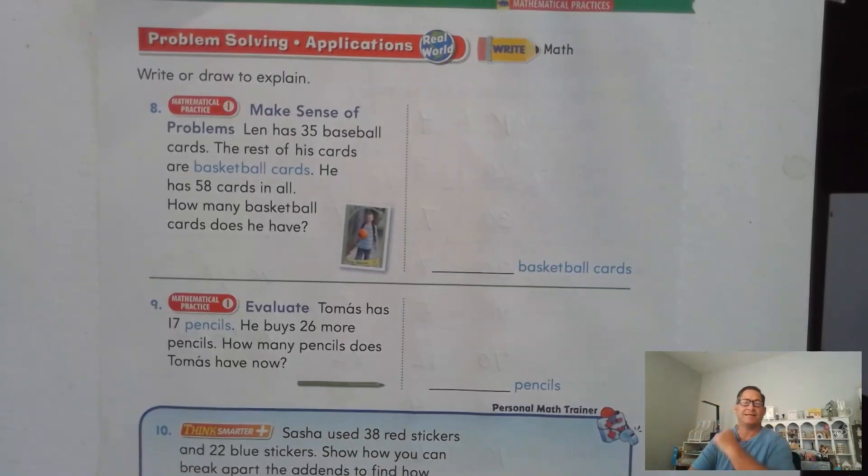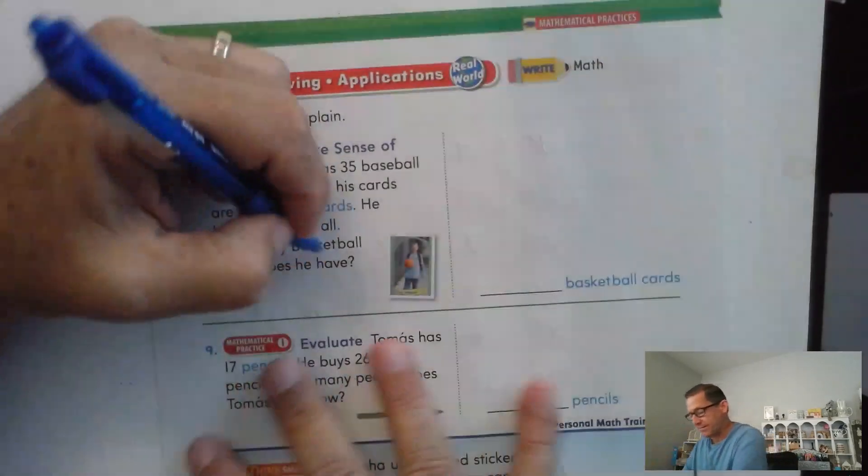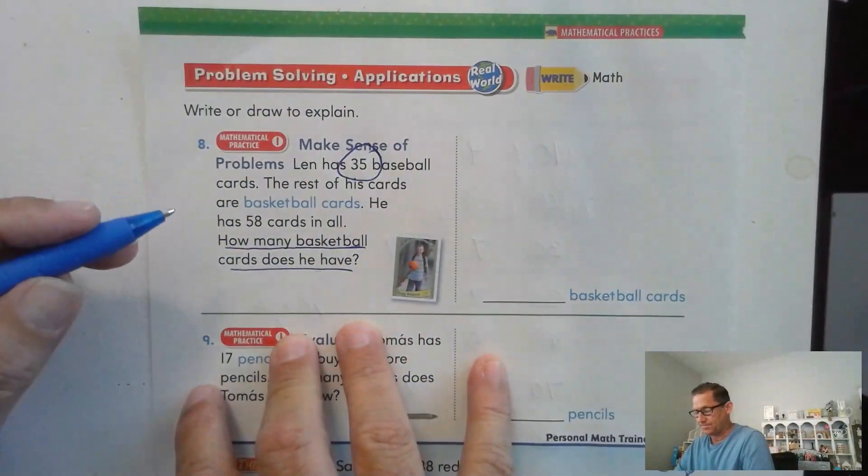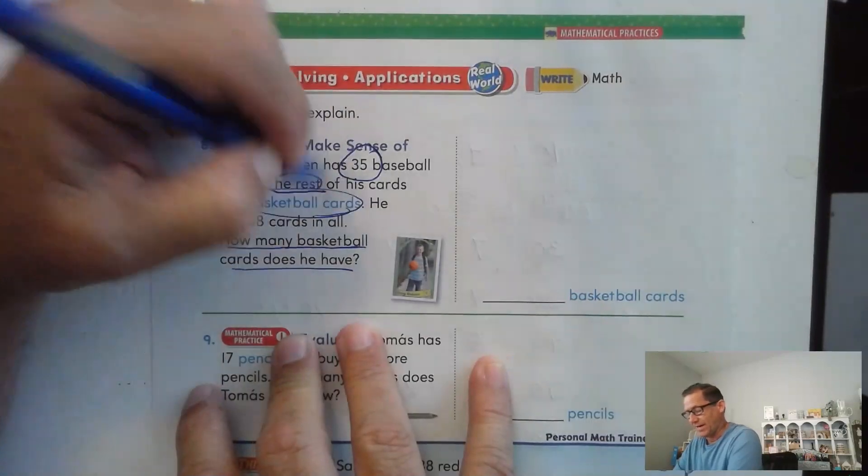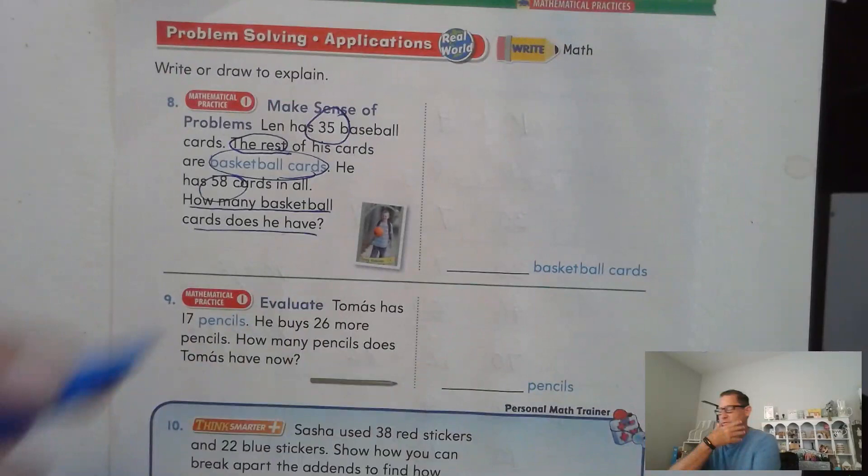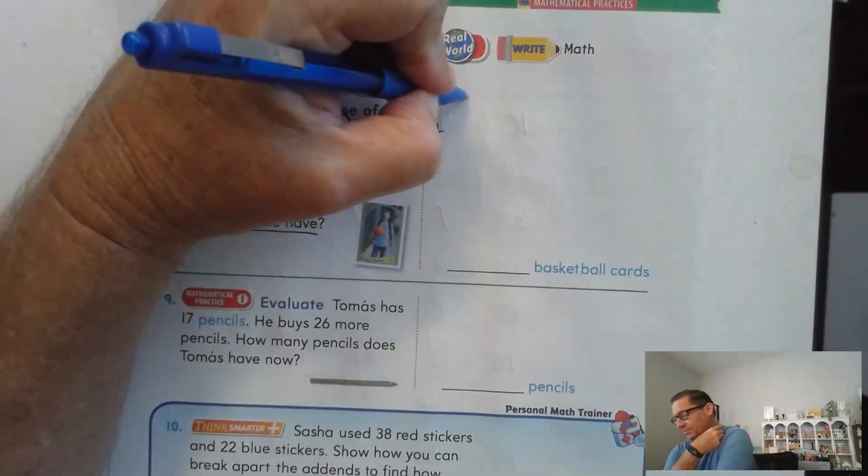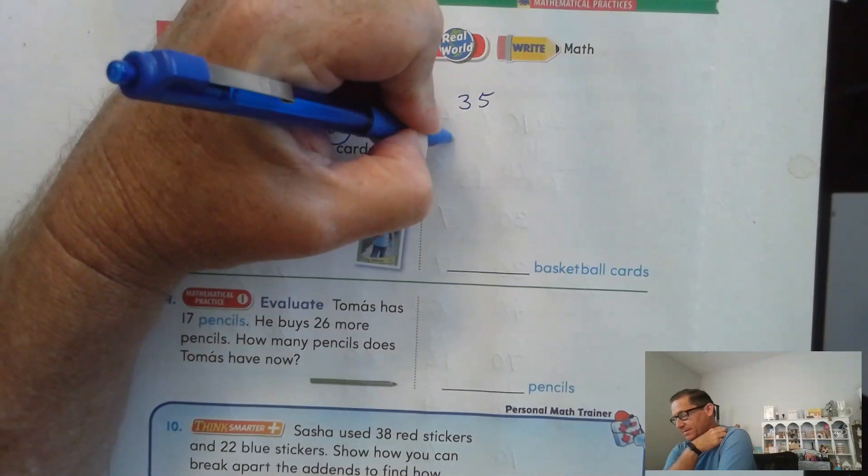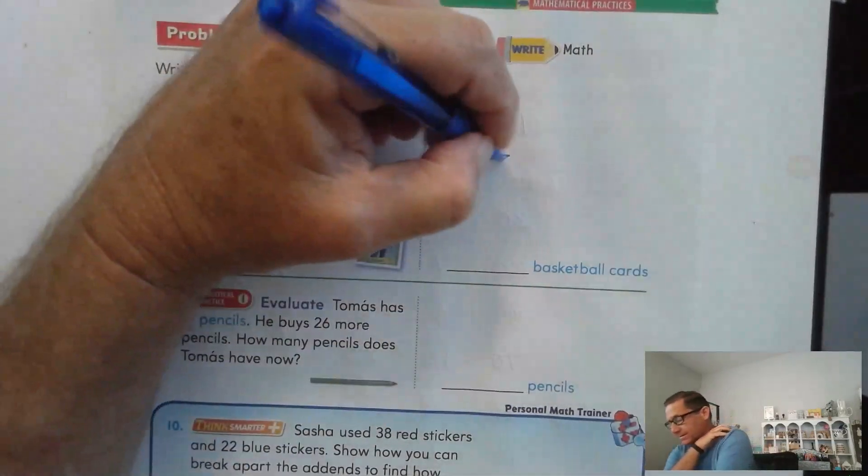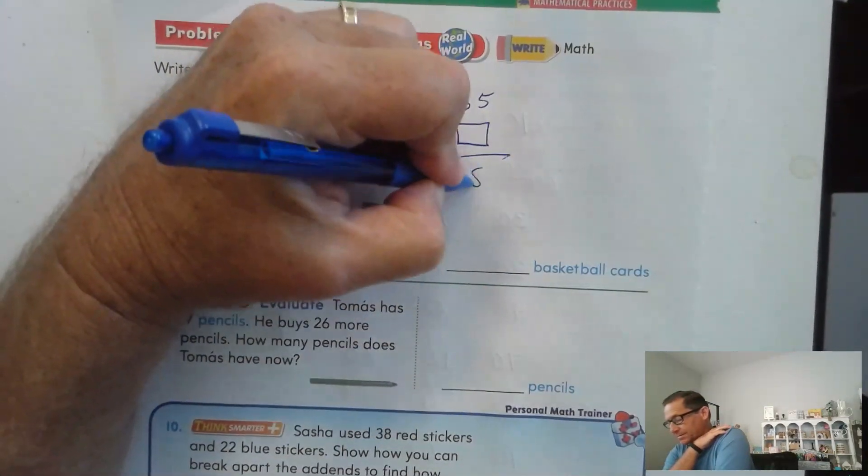Write or draw to explain. Make sense of the problem. Glenn has 35 baseball cards. The rest of his cards are basketball cards. He has 58 cards in all. How many basketball cards does he have? So he has 35 baseball and the rest are basketball. He has 58 total. So we know that we've been adding two-digit numbers. So we have 35 plus the basketball cards has to add up to 58.